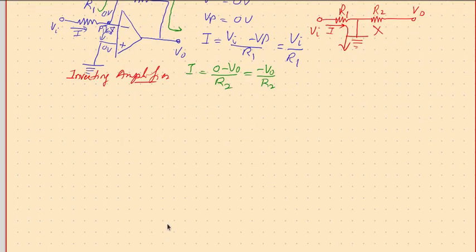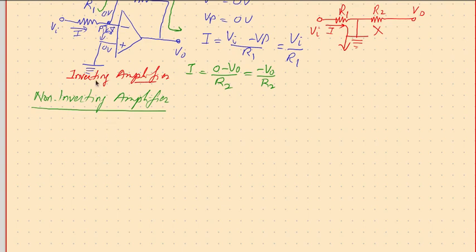Now how about if you want the output to be of same sign? Then what we call is a non-inverting amplifier. Because in the second stage of operational amplifier we have an unbalanced differential amplifier, that means one of the two transistor outputs will continue as an output.